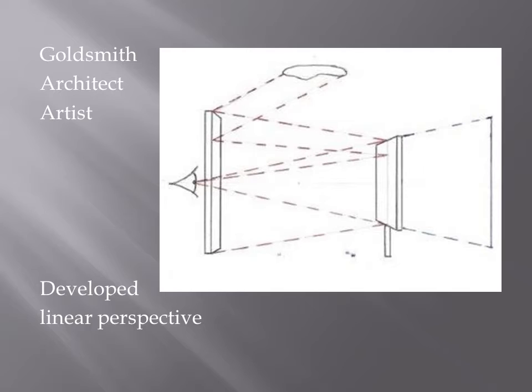Interestingly, Brunelleschi developed linear perspective in combination with painting work he was doing at the cathedral. He noticed that there were implied lines of straightness that would diminish towards a single point off in the distance when looking at buildings. He set up an experiment where he created a painting of the baptistry in front of the cathedral, set up a mirror, and looked through a small hole in the painting to compare it accurately using his system of linear perspective against the actual object — and everything lined up perfectly. Renaissance artists adopted linear perspective as a way of creating three-dimensional, realistic architectural paintings.